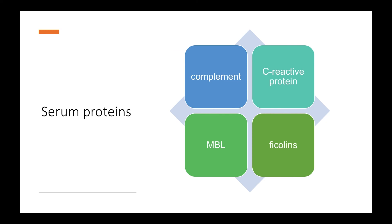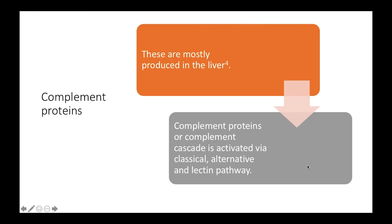Ficolins are pattern recognition receptors and they mainly activate the lectin pathway of the complement system. Now, let us learn about the complement system. The complement system is mainly formed of complement proteins, mostly produced in the liver. They can work in a cascade of events which ultimately leads to formation of the MAC complex. The complement system is activated by three pathways: classical, alternative, and lectin pathways.